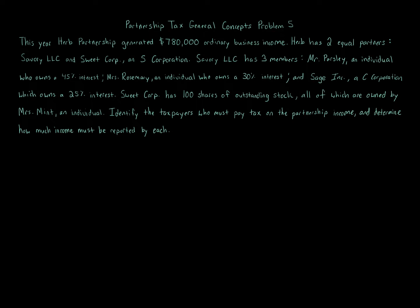Partnership tax general concepts, problem five. This year, Herb Partnership generated $780,000 of ordinary business income. Herb has two equal partners: Savory LLC and Sweet Corp, an S corporation. Savory LLC has three members: Mr. Parsley, an individual who owns a 45% interest; Mrs. Rosemary, an individual who owns a 30% interest; and Sage Inc., a C corporation which owns a 25% interest. Sweet Corp has 100 shares of outstanding stock, all owned by Mrs. Mint, an individual.